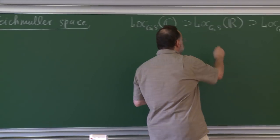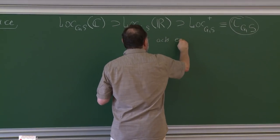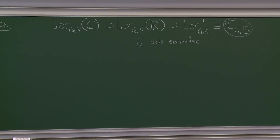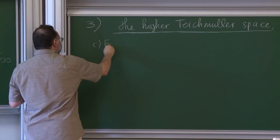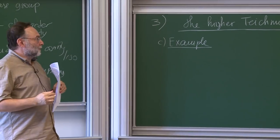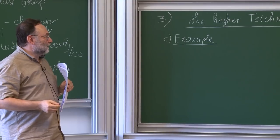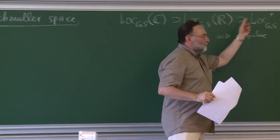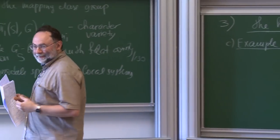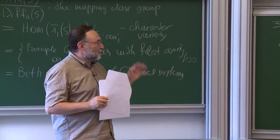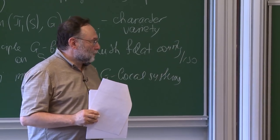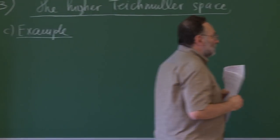The first comment is that the mapping class group acts everywhere, in particular on this part of the real locus. If you want to understand what's going on, let's do some examples first. For example, when G is the multiplicative group, log G_m S is just the set of homomorphisms of H_1(S, Z) to the multiplicative group — equivalently, H_1(gamma, C*) over complex numbers. For the real locus, you have H_1(gamma, R*), and the positive locus is H_1(gamma, R*_+). So indeed it's smaller.